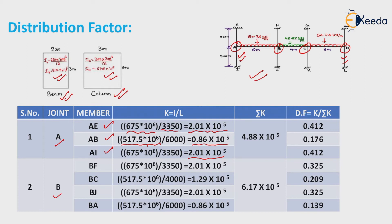Now we will do summation of relative stiffness — adding K values of AE + AB + AI to get total relative stiffness. Distribution factor for AE equals relative stiffness of AE divided by total stiffness, giving 0.412. Similarly, distribution factors for AB and AI are calculated. In the same way, we calculate relative distribution factors for BF, BC, BJ, and BA.